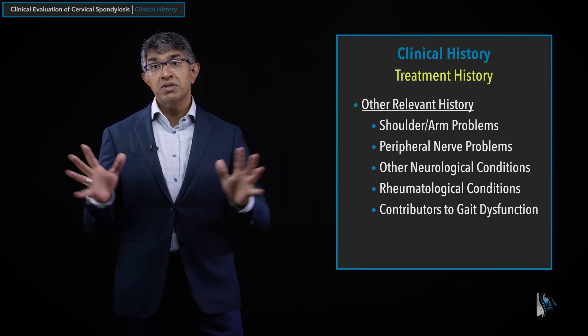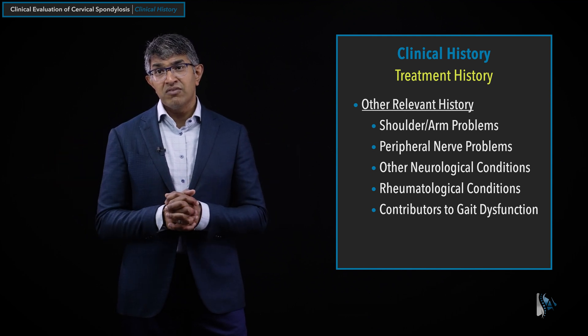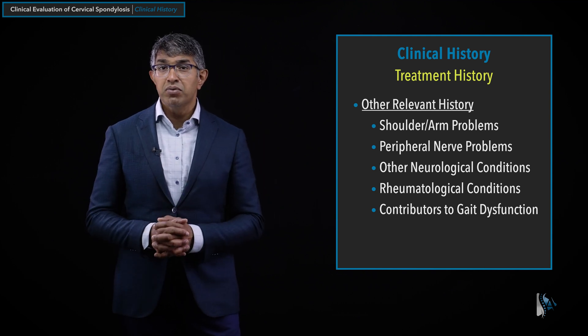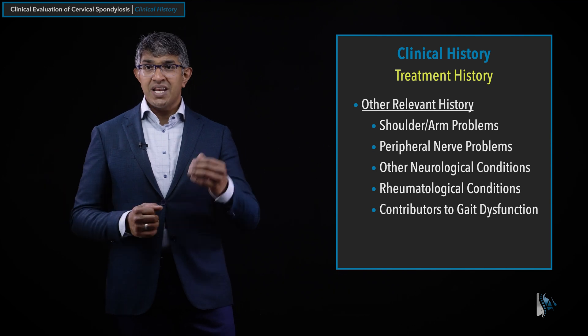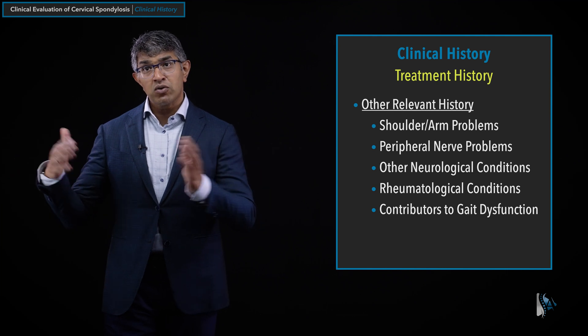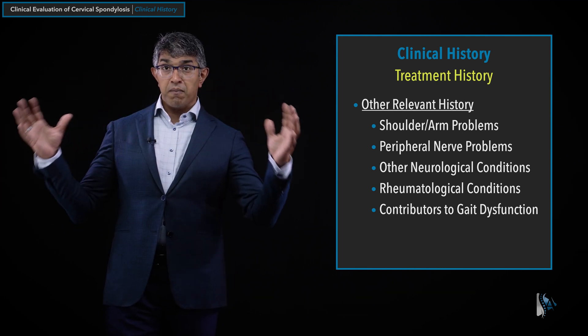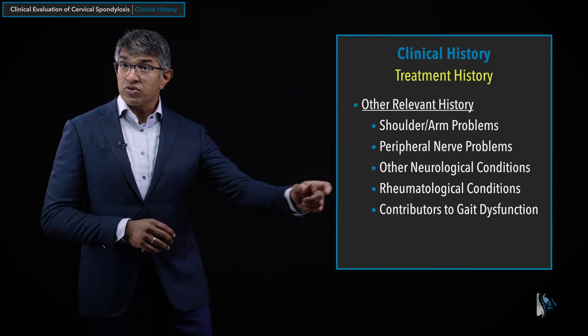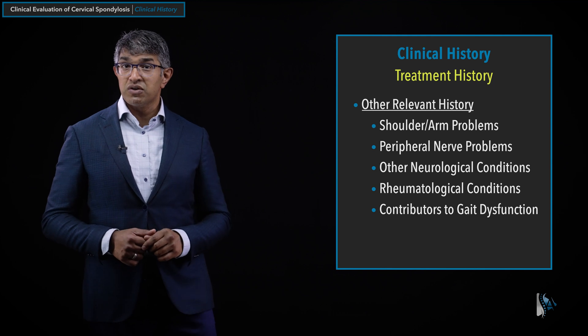Rheumatologic conditions are commonly encountered and can affect the types of symptoms people develop. I also ask about contributors to gait dysfunction — as people get older, there are many reasons for gait problems, and not all gait dysfunction is myelopathy. Even having two beers can affect tandem gait. We're looking for patterns. Other neurological conditions like neuromuscular problems or movement disorders can also color the picture of what you're seeing.